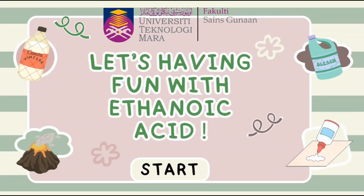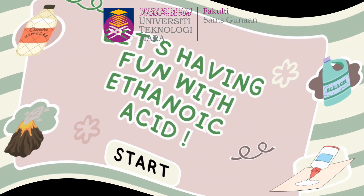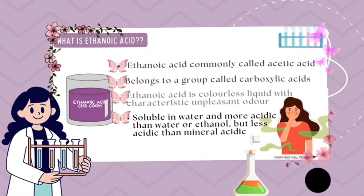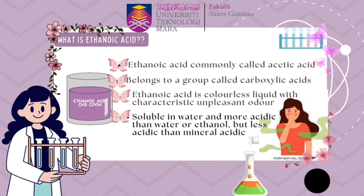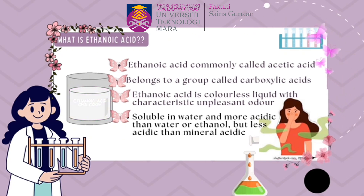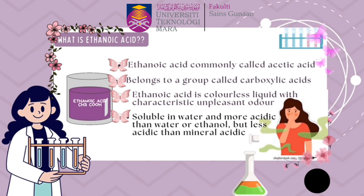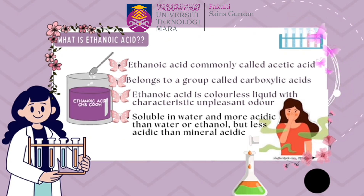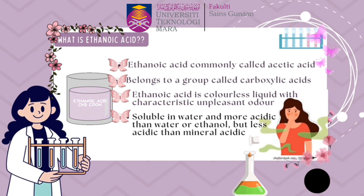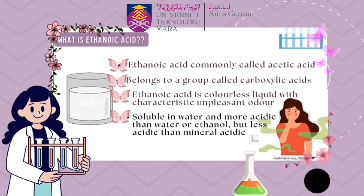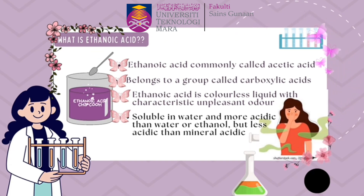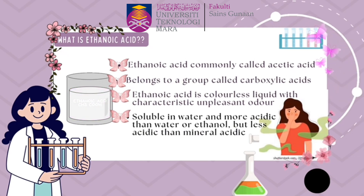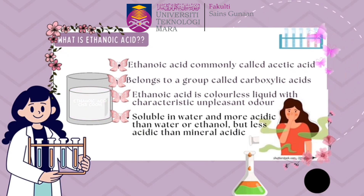Let's have fun with ethanoic acid. What is ethanoic acid? Ethanoic acid is commonly called acetic acid. It belongs to a functional group called carboxylic acid. Ethanoic acid is colorless and has a funky smell. It is soluble in water and more acidic than water or ethanol, but less acidic than mineral acids such as sulfuric acid.